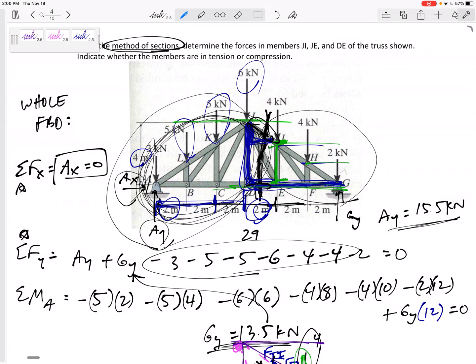It might be method of joints. It might be method of sections. Be ready for either of them. Both of them, probably what you're going to want to start with is looking at the whole free body diagram and solving for anything that you can or anything that you know you're going to use, right?